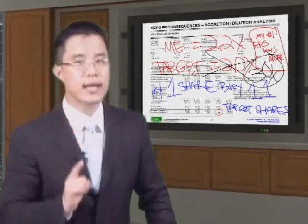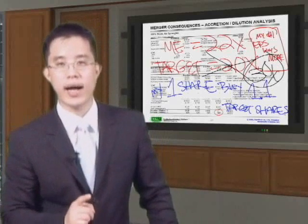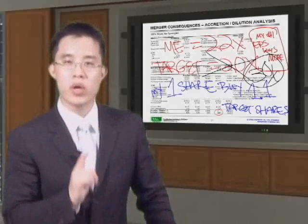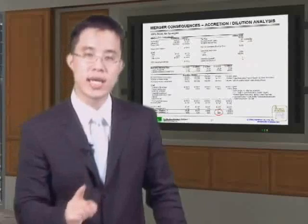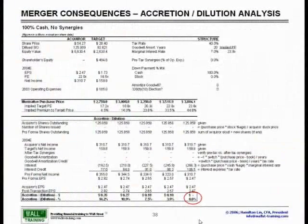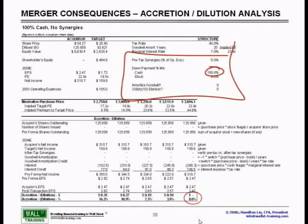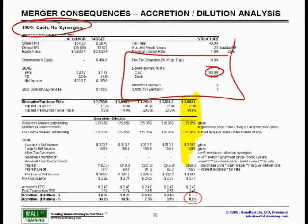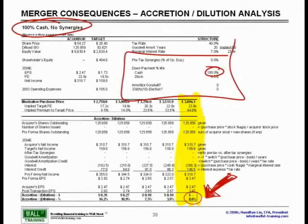What I want to do now is hone in on this concept with the next and final slide, looking at the same deal but with 100% cash instead of 100% stock. Same deal structure — 100% cash, no synergies, no goodwill amortization, no 338 — and it just so happens that at exactly 3804.1, I am at exactly zero accretion dilution.